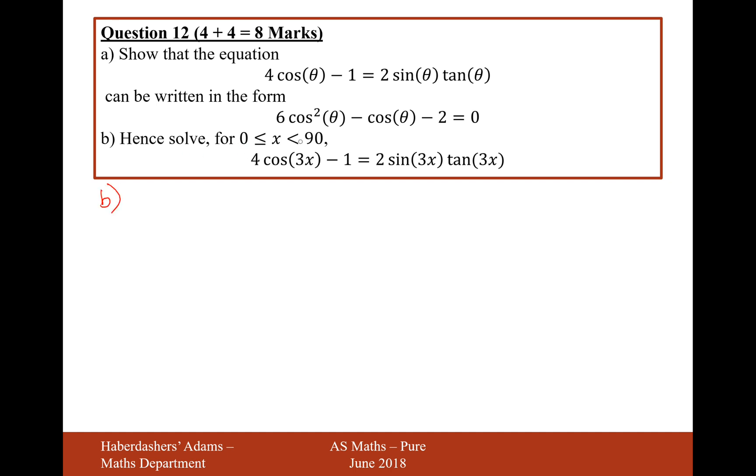Hence solve, in between 0 to 90, 4 cos 3x minus 1 equals 2 sin 3x tan 3x. So what we'll do then is, given that this thing here is basically the same as this thing here, and they've got us to do this step in part A, we'll change the expression that we're trying to solve and set θ equal to 3x.